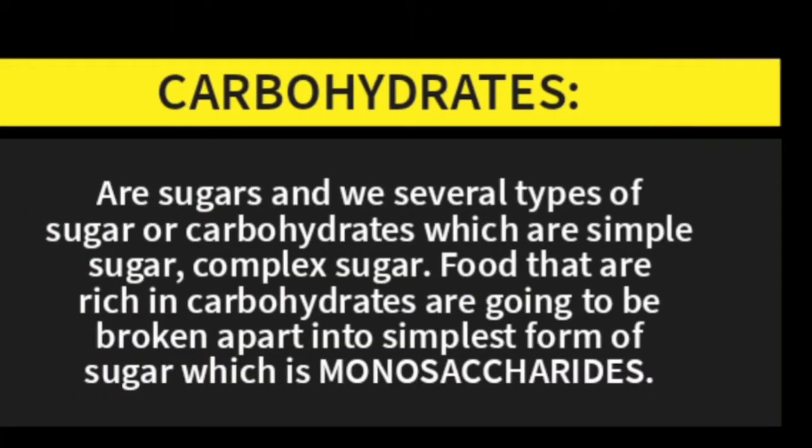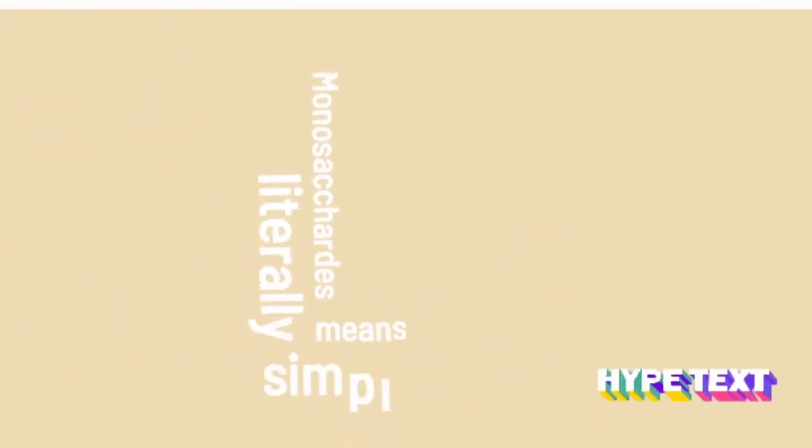Carbohydrates, also called sugars, include several types: simple sugars and complex sugars. Food that is rich in carbohydrates is going to be broken apart into the simplest form of sugar, which is monosaccharide. Monosaccharide literally means simple sugar.